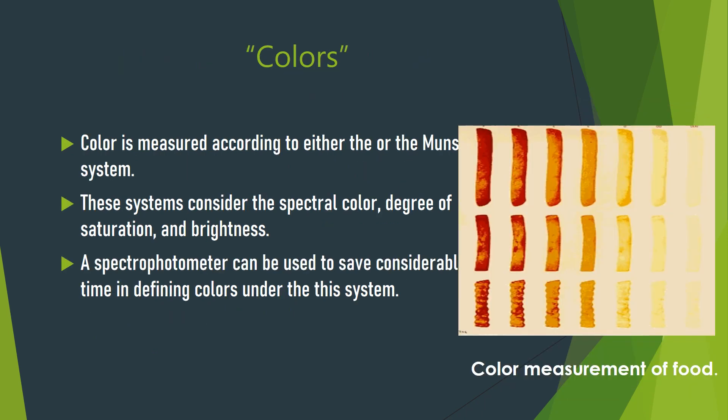Color is measured according to the Munsell system, which considers spectral color and saturation — the brightness within the Munsell system. A spectrometer can be used to save considerable time in defining colors under this system.